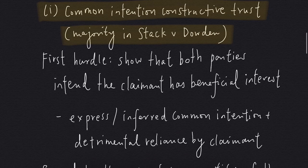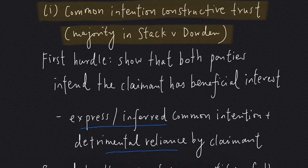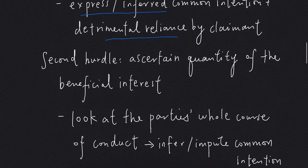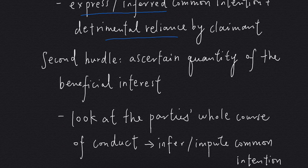So this is how the common intention constructive trust approach goes. There are two hurdles that B has to overcome. For the first hurdle, B has to show that both parties intend him to have some beneficial interest in the property — so B needs express or inferred common intention as well as detrimental reliance by him. Detrimental reliance can be financial contribution to the property. For the second hurdle, B has to ascertain the quantity of the beneficial interest, so we look at the parties' whole course of conduct to infer or impute common intention in relation to the quantity of each of the shares.